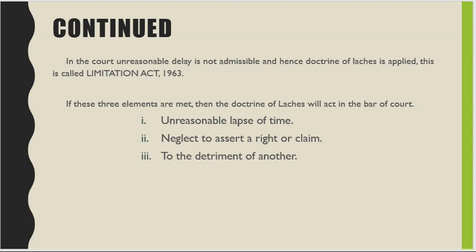The second element is neglect to assert a right or claim. This follows from the first element. If there has been an unreasonable delay, then obviously there has been neglect on the part of the aggrieved party to assert or protect their right or claim. Both elements complement each other — first there must be unreasonable delay in filing the matter, and then the party has essentially neglected whatever rights or claim they had over that infringement.